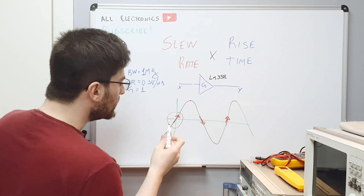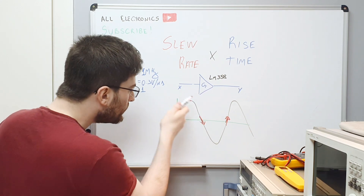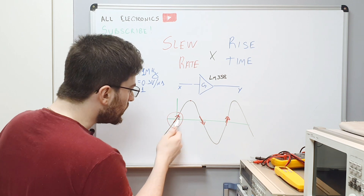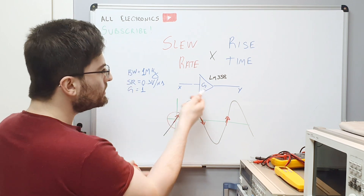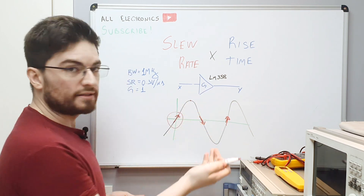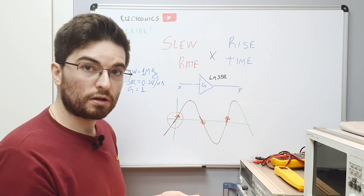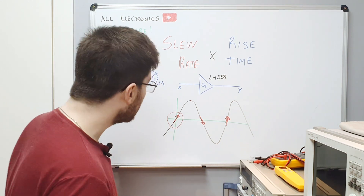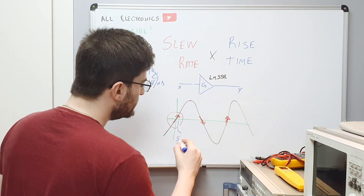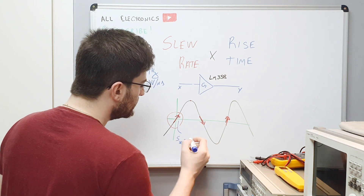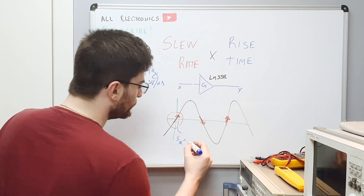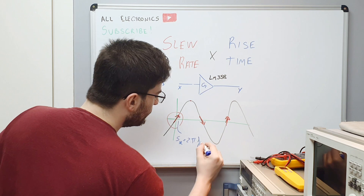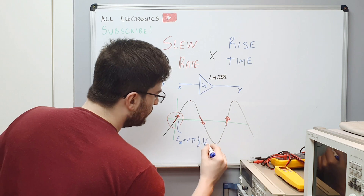If we try to put a signal in the system where its own slew is greater than the maximum slew of the system, the signal will be distorted. The slew rate of a sinusoidal signal is equal to 2π × frequency × voltage peak.